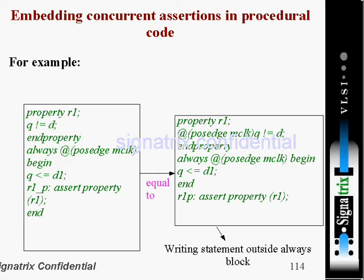Look at this example. We have a property named r1, and inside that, the property definition is: q is not equal to d. Inside an always block, we are asserting that property using 'assert property r1'. Before that, a non-blocking assignment q is equal to d1 is made, and then we check whether this property holds. If q is not equal to d, then this assertion will get fired.